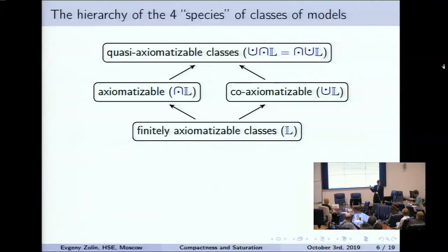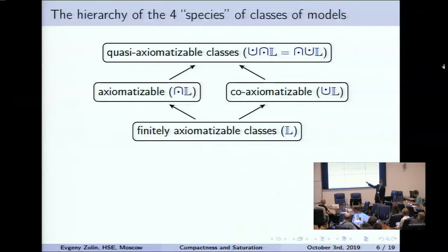Many results in mathematical logic may be interpreted as saying something about classes in these species. For example, Keisler's theorem gives necessary and sufficient conditions for a class to be in the lower species or in the left species. So it is natural to ask: what are the necessary and sufficient conditions for the other two species?